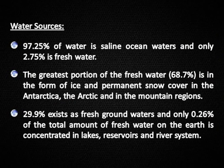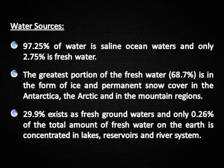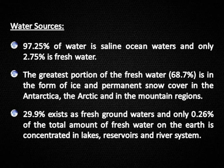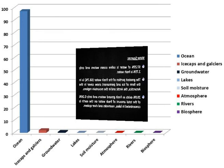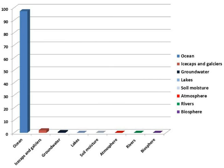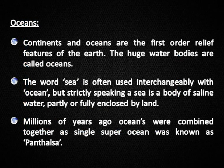Water sources: 97.25% of water is saline ocean water and only 2.75% is fresh water. The greatest portion of freshwater — 68.7% — is in the form of ice and permanent snow cover in Antarctica, the Arctic, and mountain regions. 29.9% exists as fresh groundwater, and only 0.26% of the total freshwater on earth is concentrated in lakes, reservoirs, and river systems.